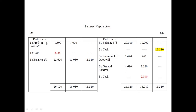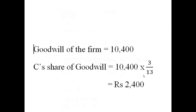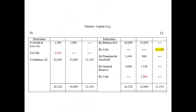Now we know C's capital amount: 11,130. So we can also fill in the yellow-highlighted amount. Write 11,130 there and complete C's column total. For A and B, the totals are still incomplete — make sure in your copy you have written only the black-colored amounts so far, not the red-highlighted ones.